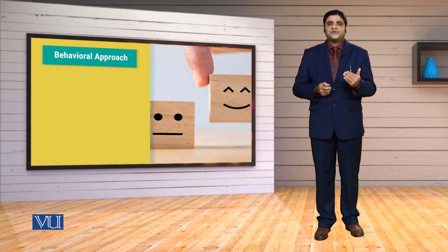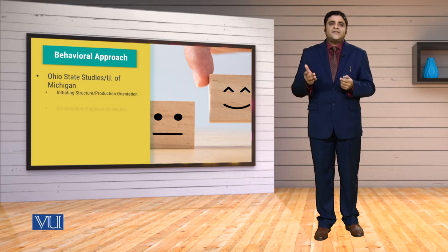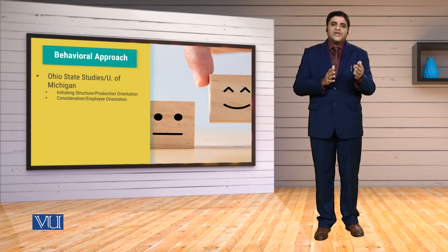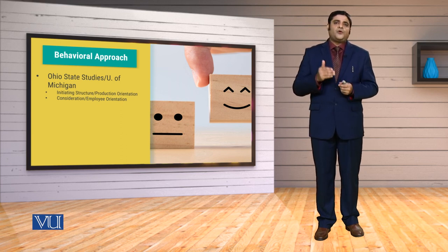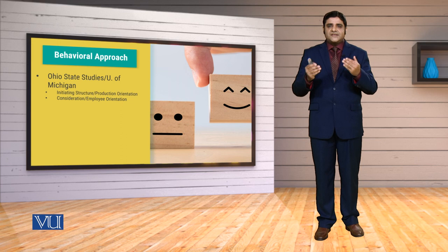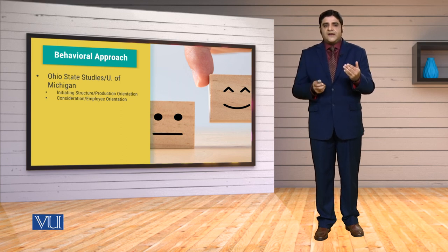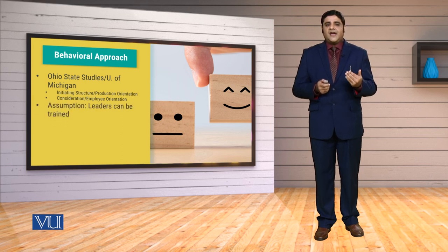When we talk about the behavioural approach, different studies were launched. The major contributions came from Ohio State studies and the University of Michigan. They came up with the idea that there are certain types of leaders who can be categorized as initiating structure or production orientation, and the other category they found is consideration or employee orientation. Based on these two foundations, they decided that leaders exist between these two basic aspects — either they would be production oriented or employee oriented. The underlying assumption was that leaders can be trained.